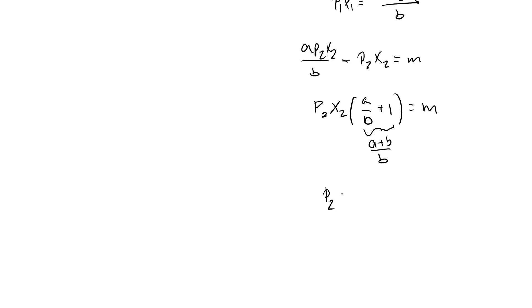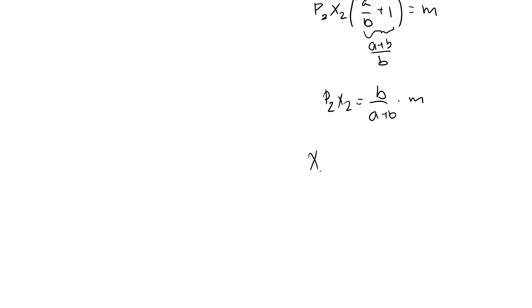From this, we have p2x2, just multiply both sides by b over a plus b, b over a plus b times m, and then divide by p2, and we have x2 star equal to b over a plus b times m over p2.